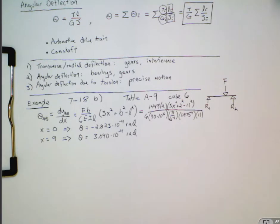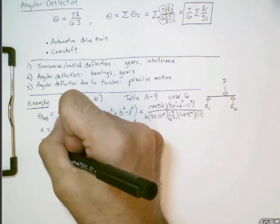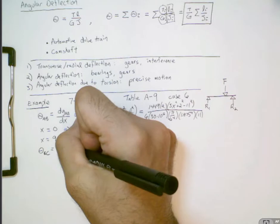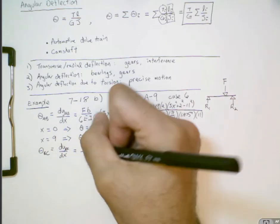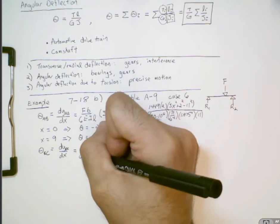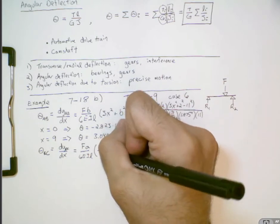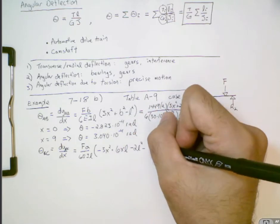Now this was all for analyzing the shaft to the left of the load using that formula. To the right of the load we use a different formula. And the slope theta BC, that's going to be equal to dy BC dx equals F times A instead of B divided by 6EIL times the quantity minus 3x squared plus 6xL minus 2L squared minus A squared.